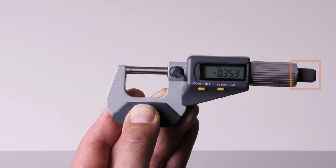In summary: Use the quick drive to get close to the surface which you want to measure and then use the ratchet until its torque mechanism is triggered.